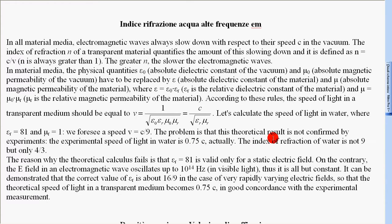The index of refraction of water is not 9 but only 4 thirds. The reason why the theoretical calculus fails is that εr is valid only for a static electric field. On the contrary, the E field in an electromagnetic wave oscillates up to 10 to the 14 Hz in visible light.